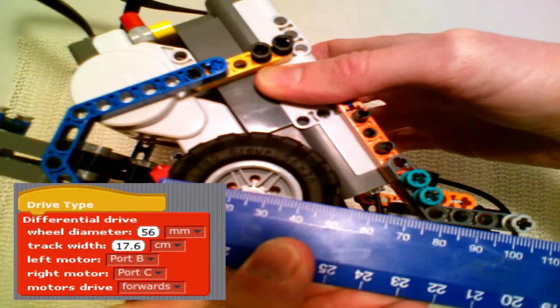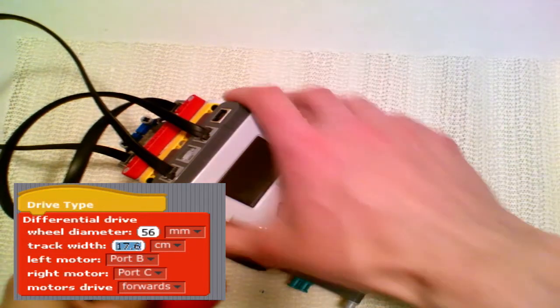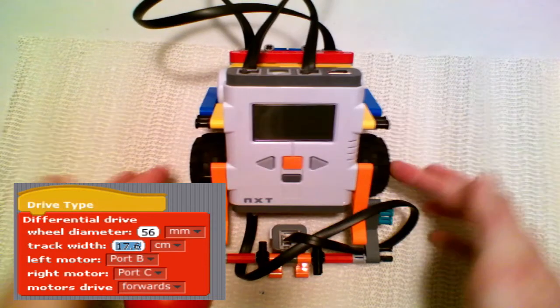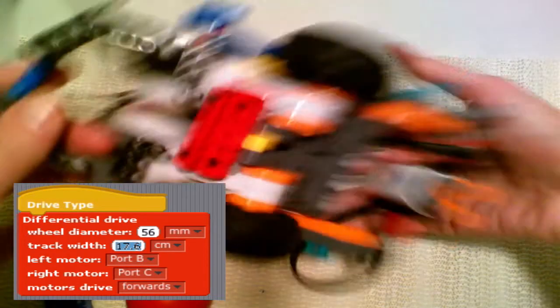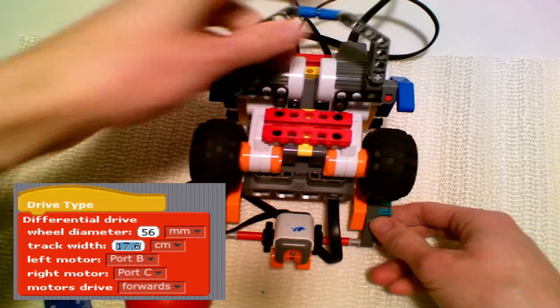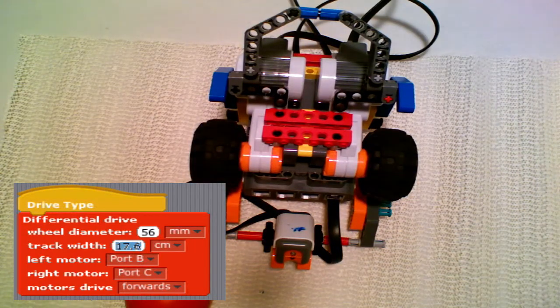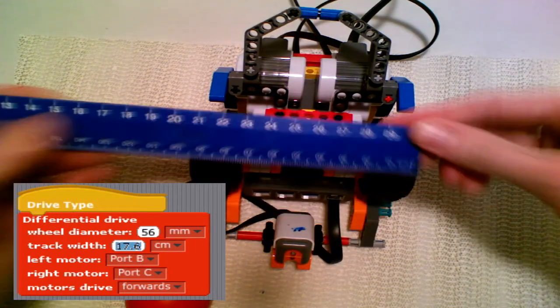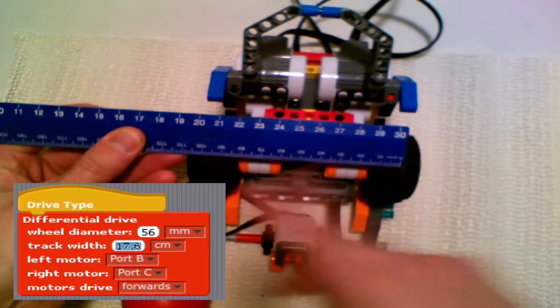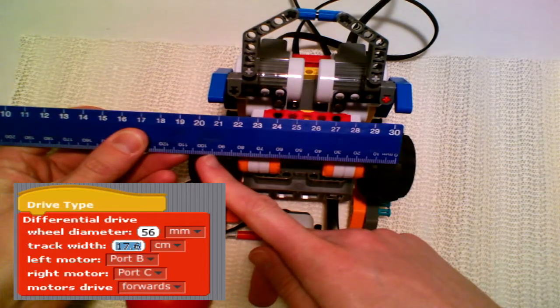The next thing I need to know is the track width, or the wheel base. This is the diameter of the circle made by the robot if it spins in place. We can measure this from the center of one wheel to the center of the other wheel, only it's hard to measure exactly from center to center.